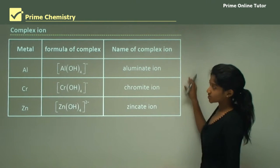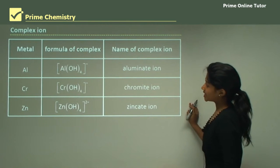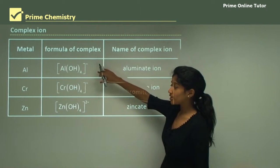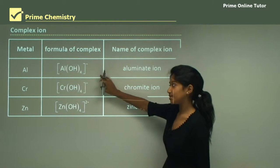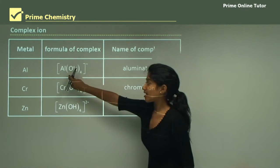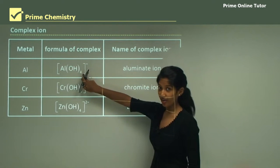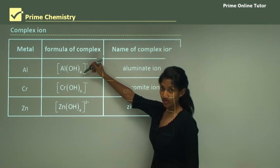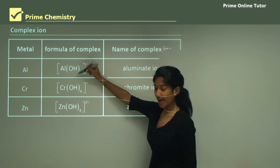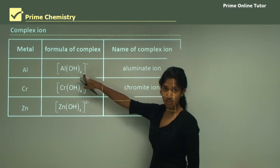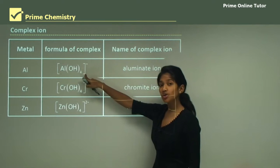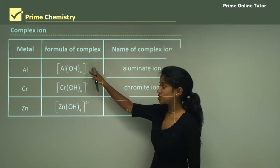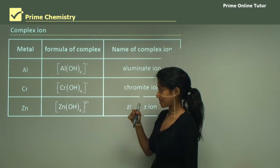Now let's look at some complex ions. For aluminium, the formula for its complex ion — in other words its aluminium hydroxide ion — is Al with brackets, OH, and a 4 next to it, because we have 4 OH groups. It has a charge of minus 1.